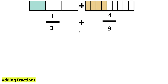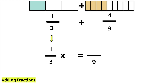Can we turn thirds into ninths? We can. We can do that by multiplying. 1 third times what will give us a denominator of 9? That way, we can have common denominators. We know that 3 times 3 is 9, and what we do to the bottom, or the denominator, we must do to the numerator. So, let's multiply the numerator by 3.